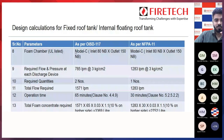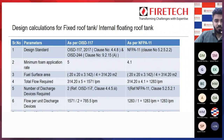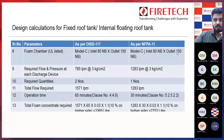From the manufacturer's data sheet, based on the total flow requirement, Model C with inlet 80 NB and outlet 150 NB is required as per OSD 117. The same Model C — inlet 80 NB and outlet 150 NB — is also required as per NFPA 11 for that flow.